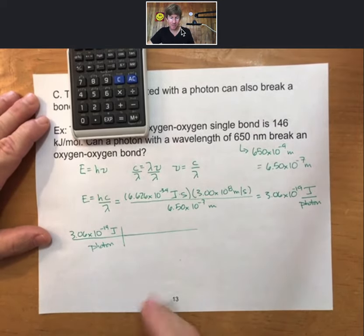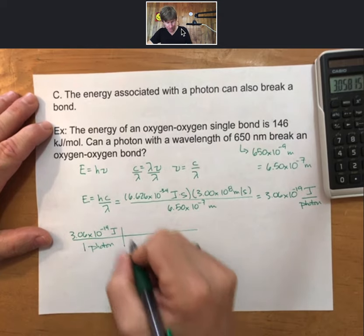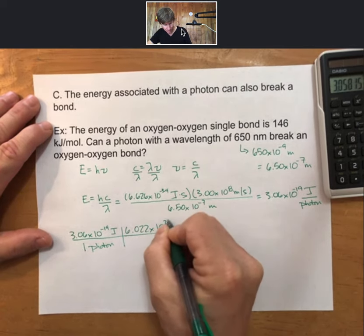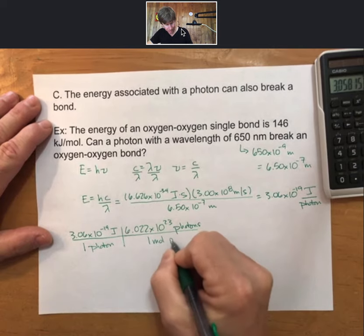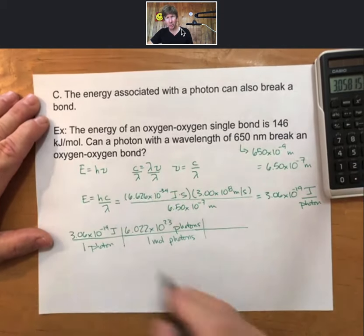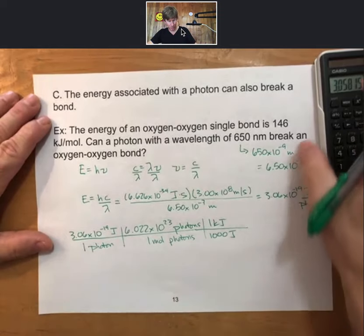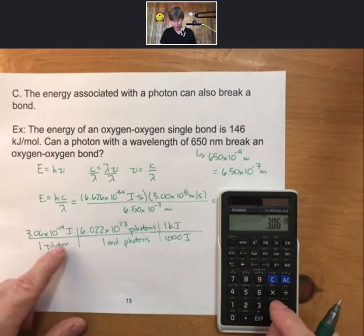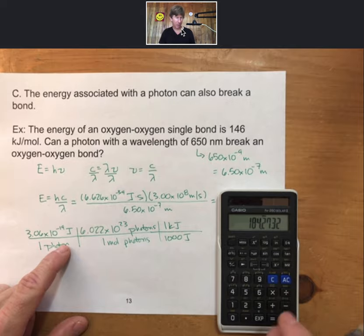We have joules per photon. We know that's per one photon. If we're going to get to moles, we need to use Avogadro's number. 6.022 times 10 to the 23rd of anything, but in this particular case photons, equals a mole of that same thing. And then because we're in kilojoules, we'll convert joules to kilojoules. 1,000 joules equals 1 kilojoule. So start with our joules, multiply it times Avogadro's number, divide it by 1,000, and we get 184.